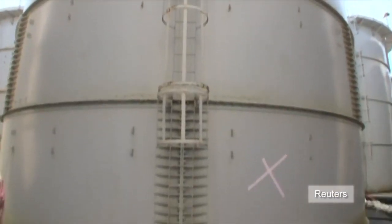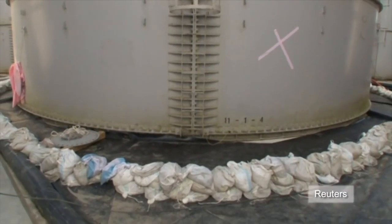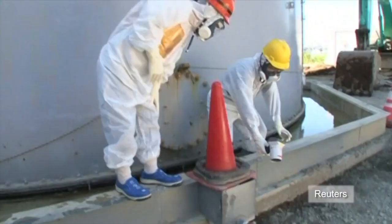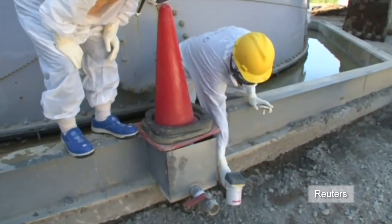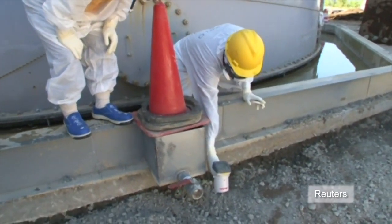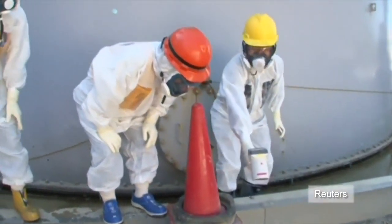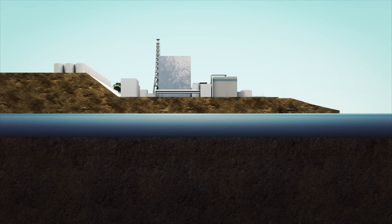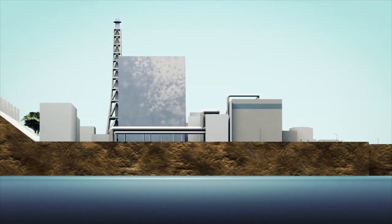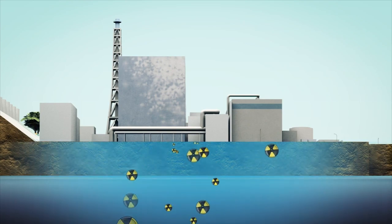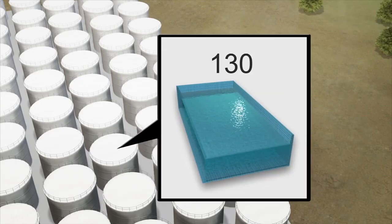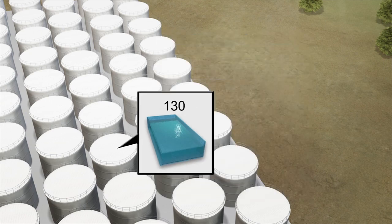Experts have recently detected even higher levels of radiation than previously recorded around storage tanks at the Fukushima nuclear power plant, while contaminated water continues to leak from the facility and into groundwater and the ocean. Roughly 400 tons of water daily is used to cool the remaining fuel, but some escapes through cracks in the facility and into groundwater below. Meanwhile, the contaminated water that's been collected so far is enough to fill about 130 Olympic-sized swimming pools.